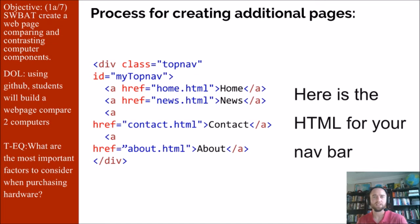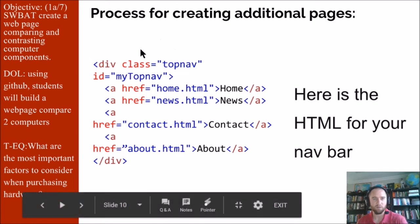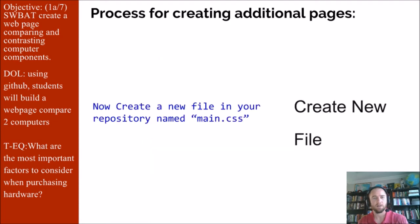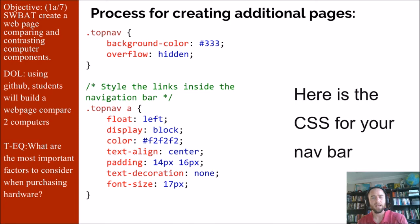Here's the process for creating additional pages. In your index.html file, you're going to have something that looks like this, and what this does is create a navigation bar for you. Here's the HTML — copy that down exactly right now. Then you're going to create a new file in your repository named main.css. Here's the CSS for the navbar, and inside main.css, this is what you're typing. Type it exactly, please.